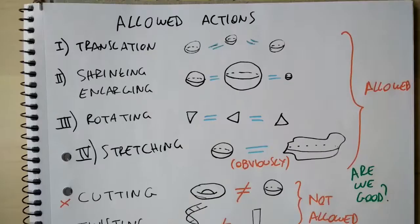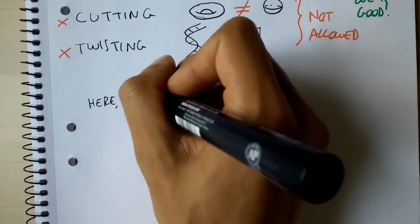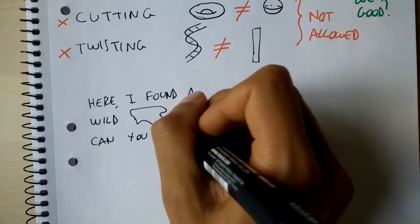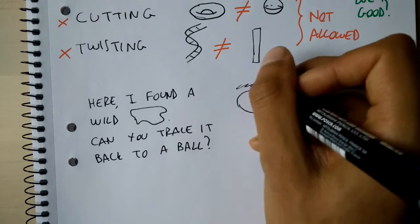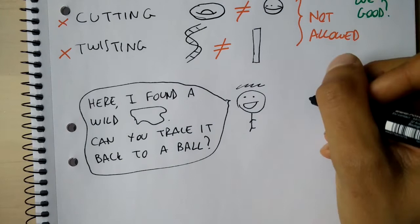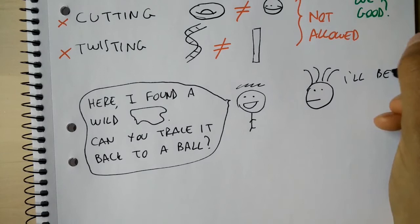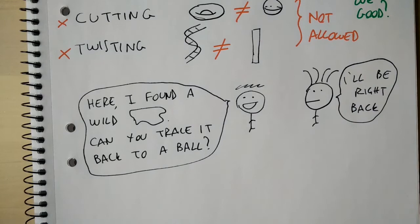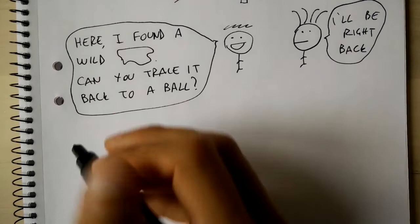While we have for sure taken a step forward, it is still not quite enough. In fact, it is still vague, in the sense that I can give you a shape and ask, can you trace it back to a ball using the allowed actions? If you can, then great, it is for sure equal to a ball. But if you can't, how do you know nobody can? Could it be that you can't see a sequence of actions that actually exists, and that would transform that shape back to a ball? So it looks like we still need to dive in more, to refine the question even further, and make it more precise.